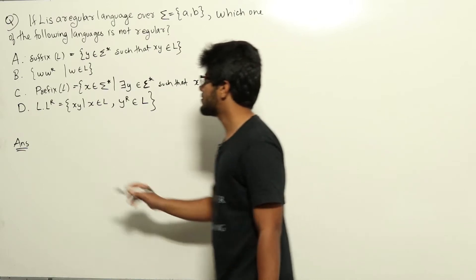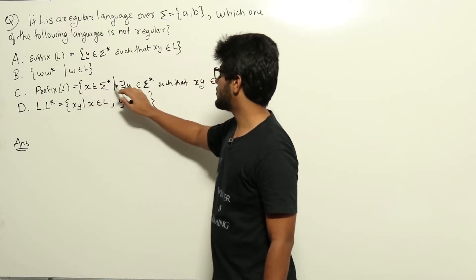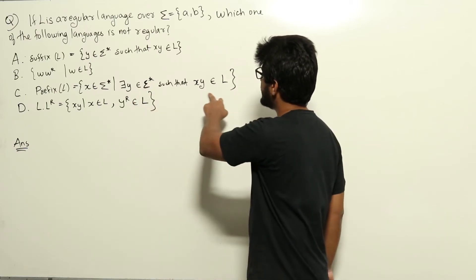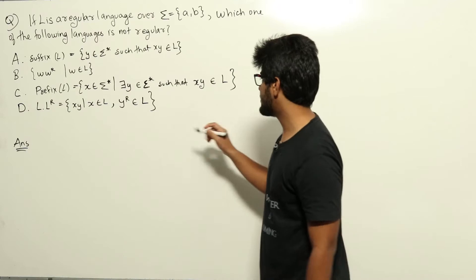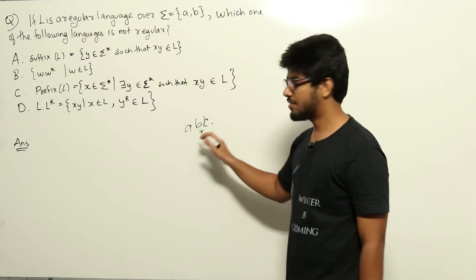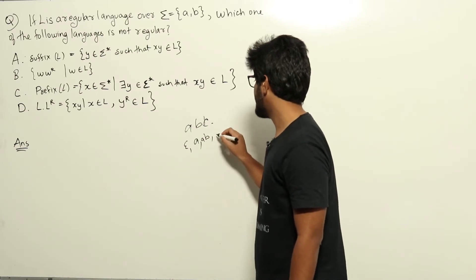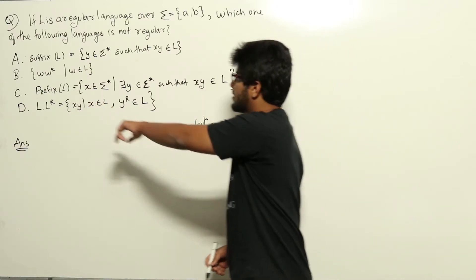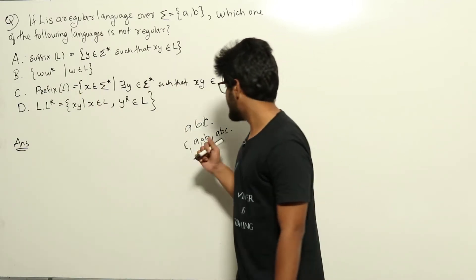First, take a look at option C: prefix of L, which is the set of all strings x belonging to epsilon-star such that there exists y belonging to epsilon-star such that xy belongs to L. This is the prefix language of L. For example, if L contains the string 'abc', then the prefix of L will contain epsilon, a, ab, and abc.